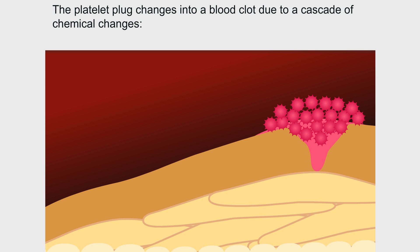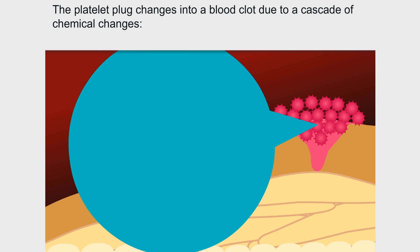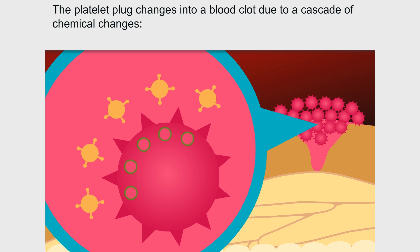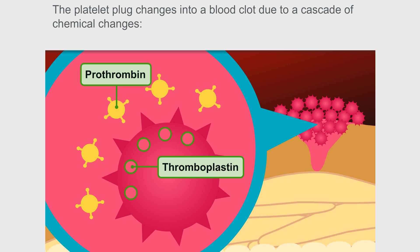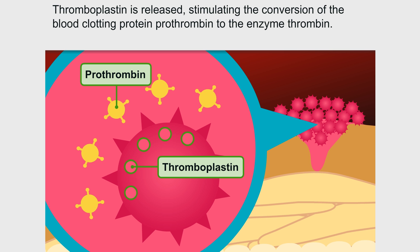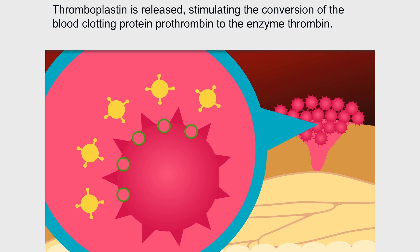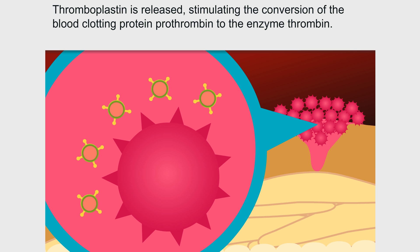The platelet plug changes into a blood clot due to a cascade of chemical changes. Thromboplastin is released, stimulating the conversion of the blood clotting protein prothrombin to the enzyme thrombin.